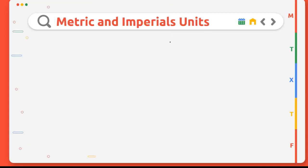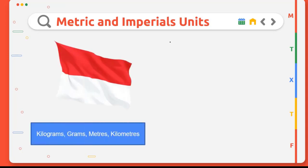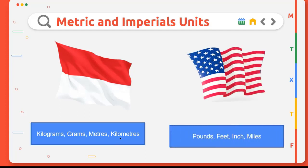Do you know, not all countries use the same unit of measurement? In Indonesia, we're using the metric system of measurement, like kilograms, grams, meters, and kilometers. But in another country, like US and England, they're using the measurement called imperial units, like pounds, feet, inch, and miles.